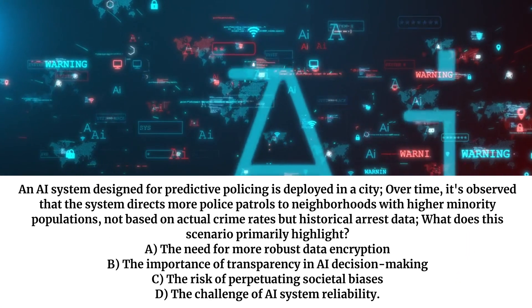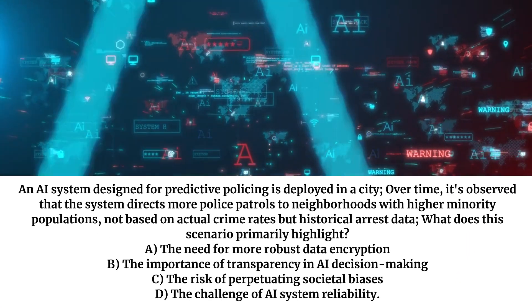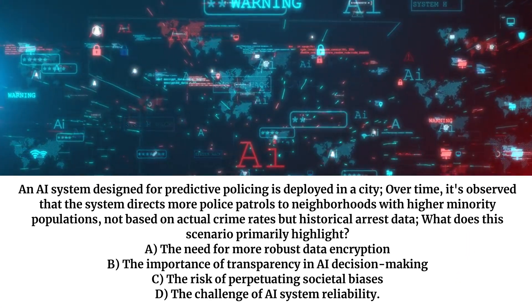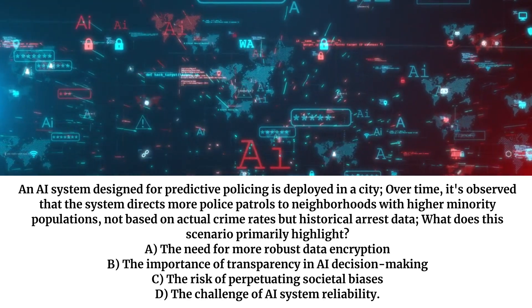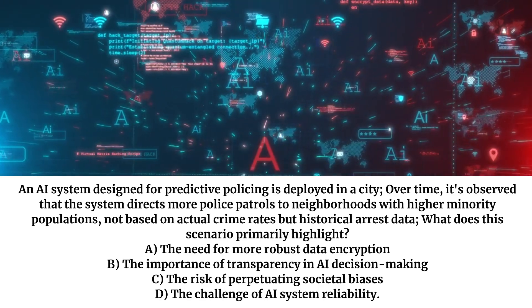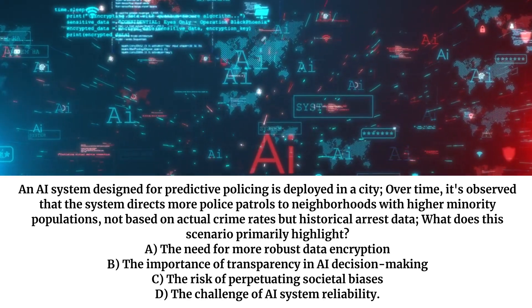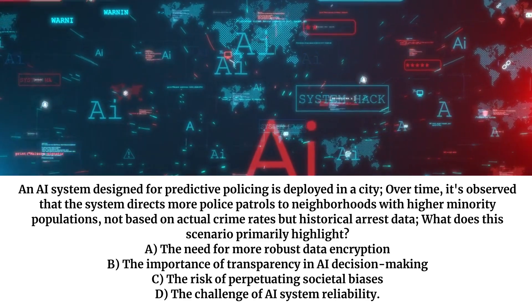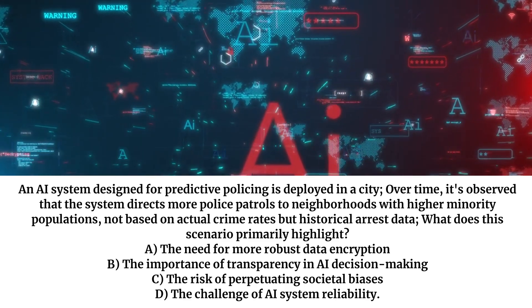An AI system designed for predictive policing is deployed in a city. Over time, it's observed that the system directs more police patrols to neighborhoods with higher minority populations, not based on actual crime rates but on historical arrest data.